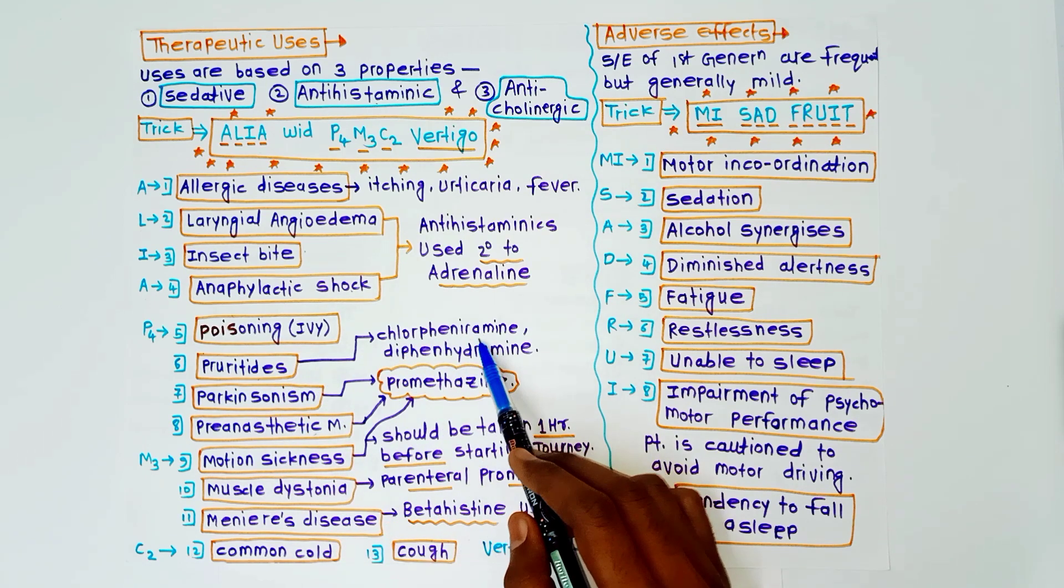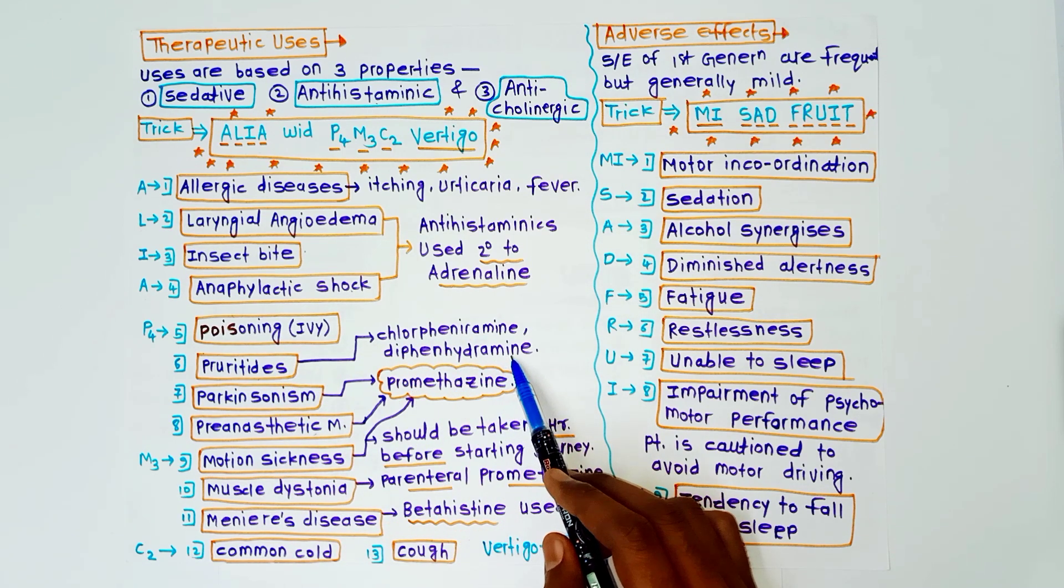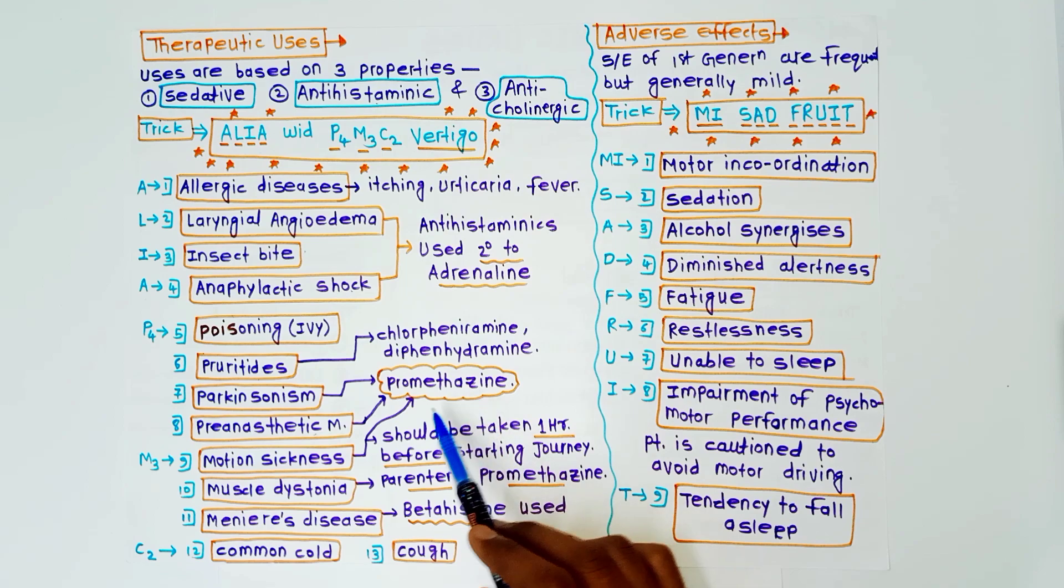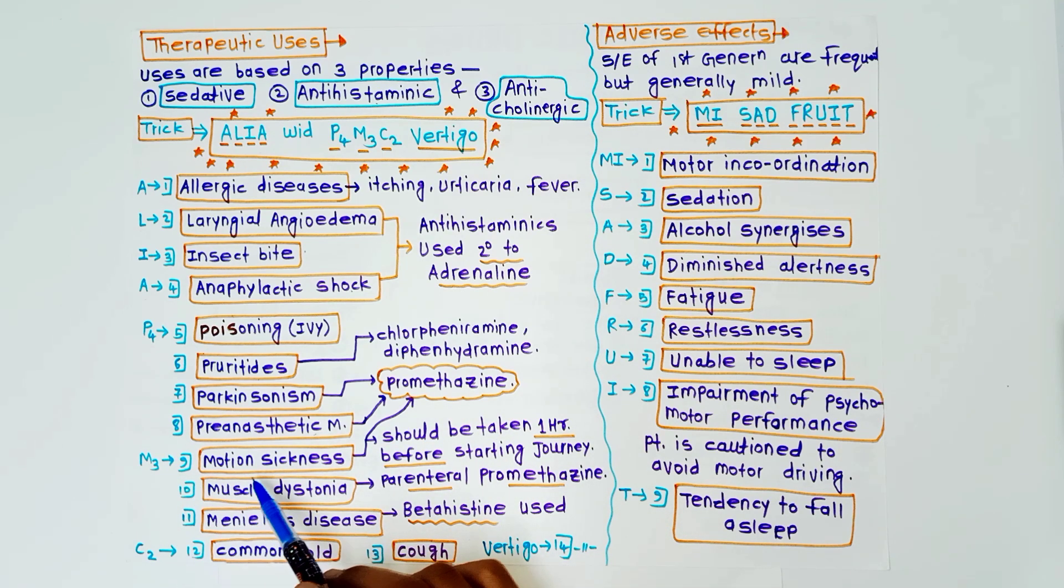Now M3, M3 for motion sickness, muscle dystonia, and Meniere's disease. In case of motion sickness, promethazine is used. It should be taken one hour before the starting of the journey. Next is muscle dystonia. In this case parenteral promethazine is used.